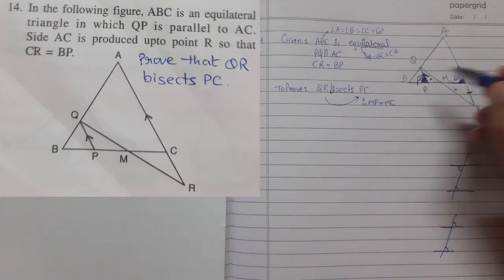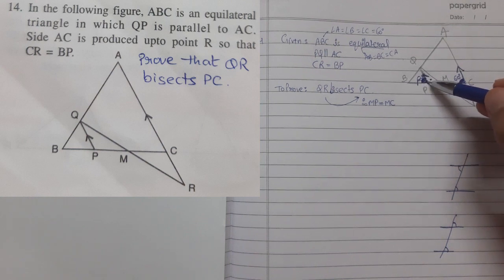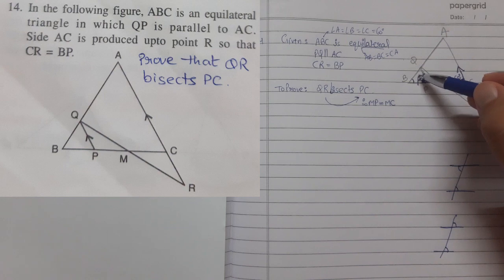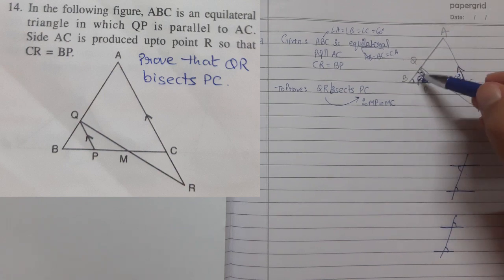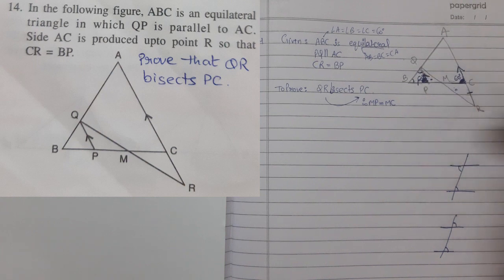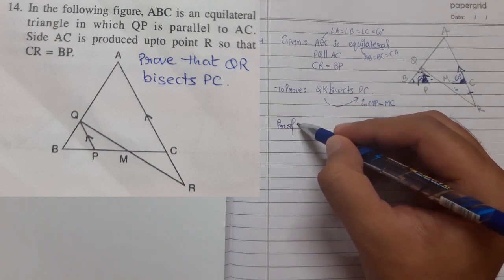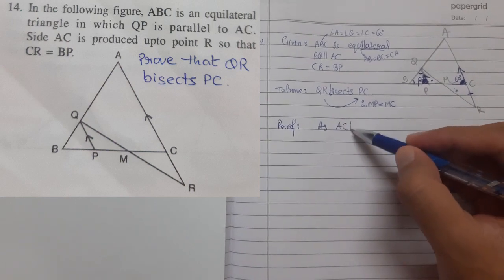This angle can also be 60 degrees because of the corresponding angle property — one interior, one exterior. This is 60°, so by corresponding angle property we can prove this angle is also 60°. We already know this angle is 60°, so by the angle sum property this angle is also 60°. Since all three angles in triangle QBP are 60 degrees, it is also an equilateral triangle.